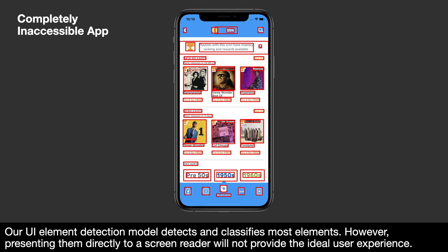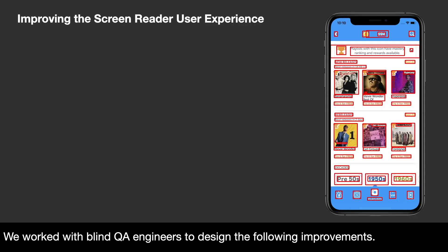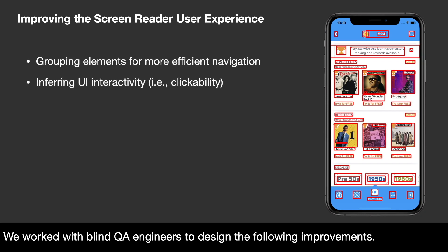Our UI element detection model detects and classifies most elements. However, presenting them directly to a screen reader will not provide the ideal user experience. We worked with blind QA engineers to design the following improvements: grouping elements for more efficient navigation, inferring UI interactivity such as clickability, and inferring a navigation order.